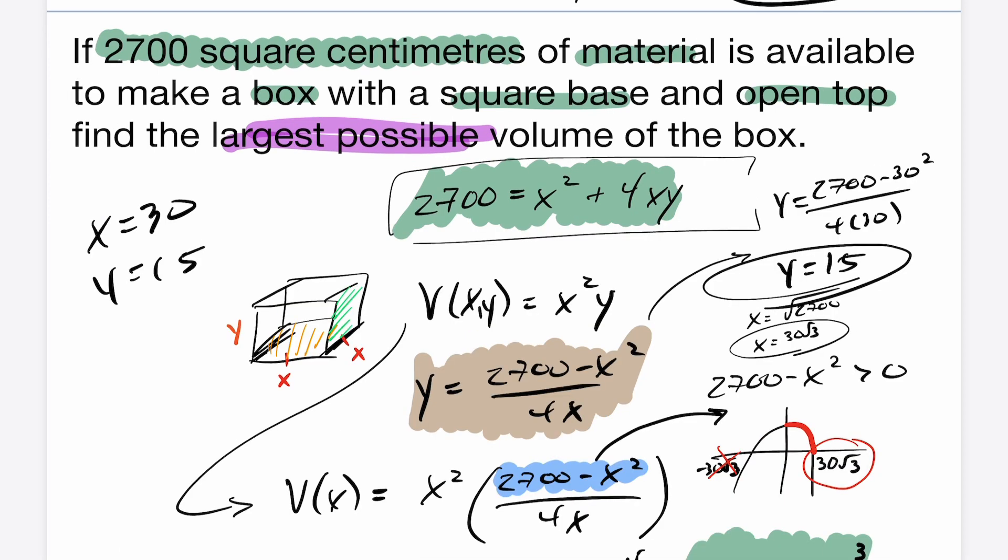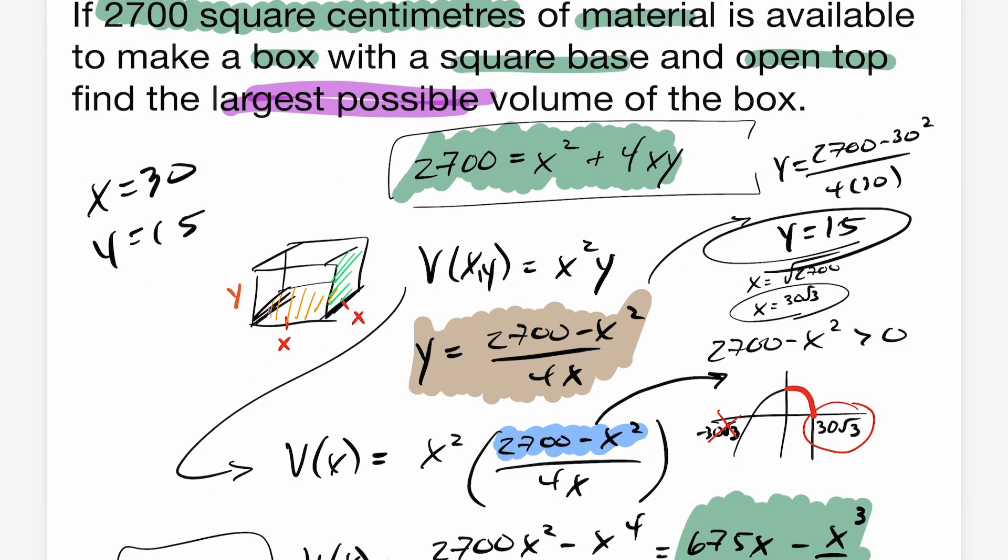All right. Here's an example of an optimization question using creating a box. This was an open top box. The adjustments to the question, sometimes they'll have a situation where the box is closed. So you might have changes four to a five and go through the process. Maybe it's not necessarily a square based box. All right. Check my page for more examples of optimization problems.